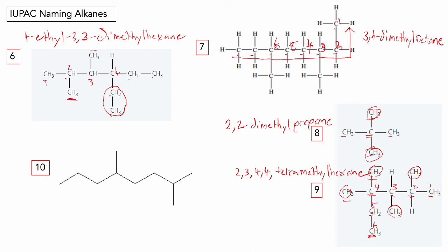Here's a structure type you may not have seen yet — skeletal structures. At the end of each line is a carbon; hydrogens are not shown, but if there were a halogen it would be specified with its symbol. Looking at this structure, I count one, two, three, four, five, six, seven, eight carbons — so that's octane. We have single-carbon side chains — those are methyl groups. Numbering from right to left: one, two, three, four, five — the methyl groups are on carbons two and five. So the name is 2,5-dimethyloctane.